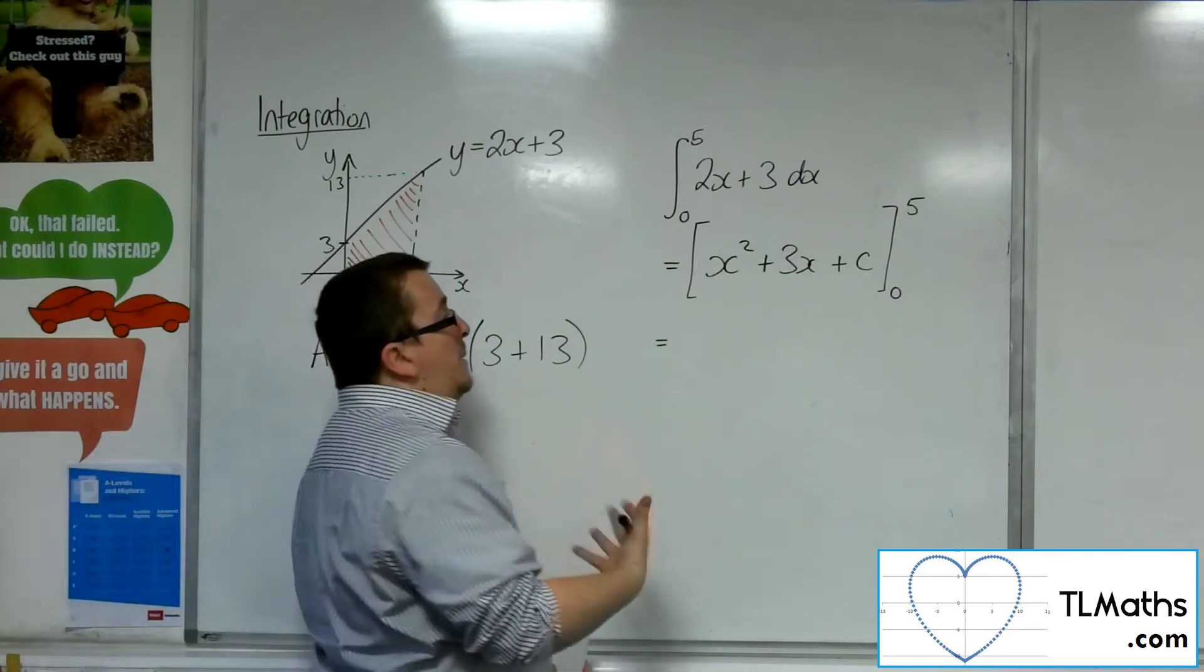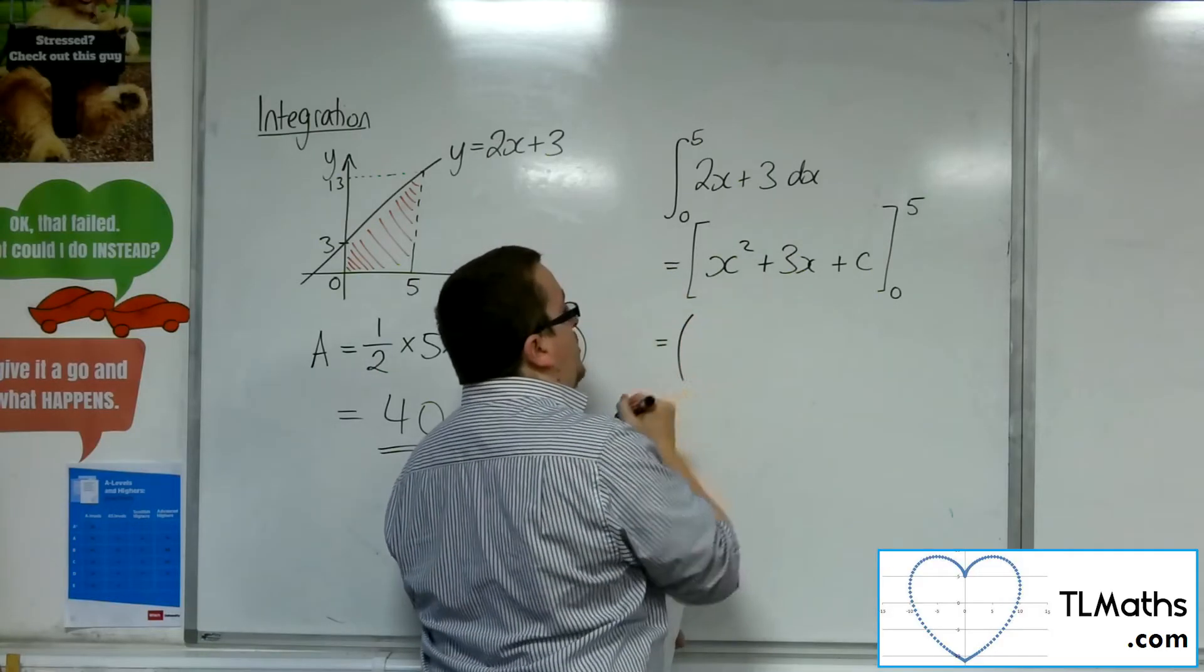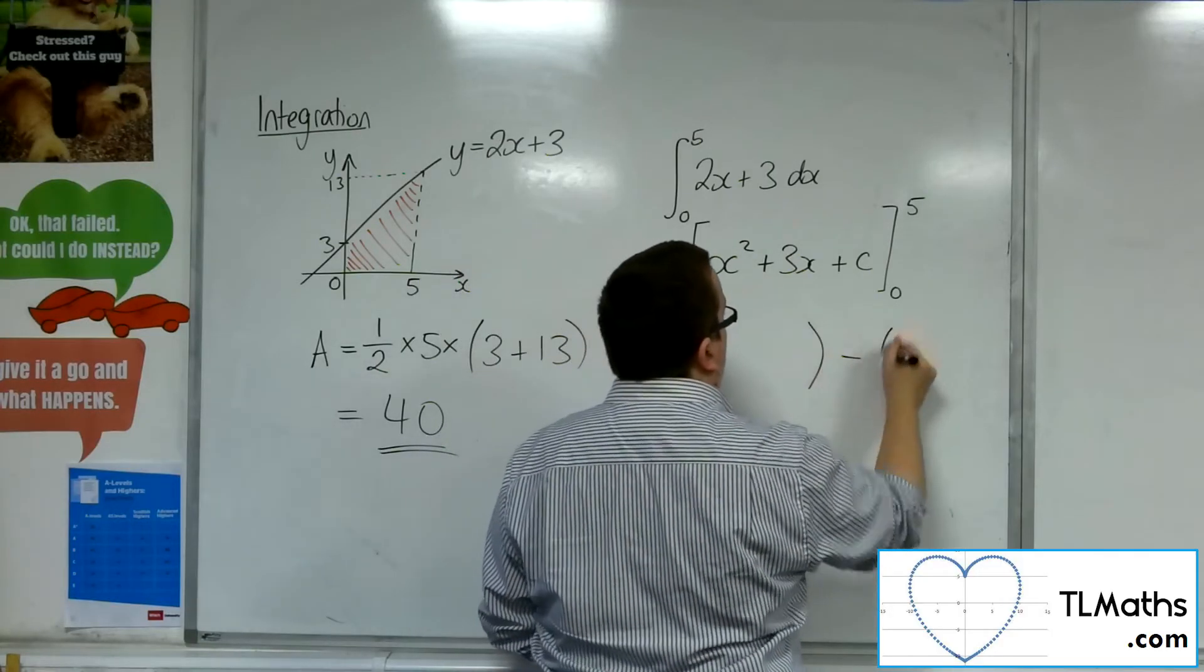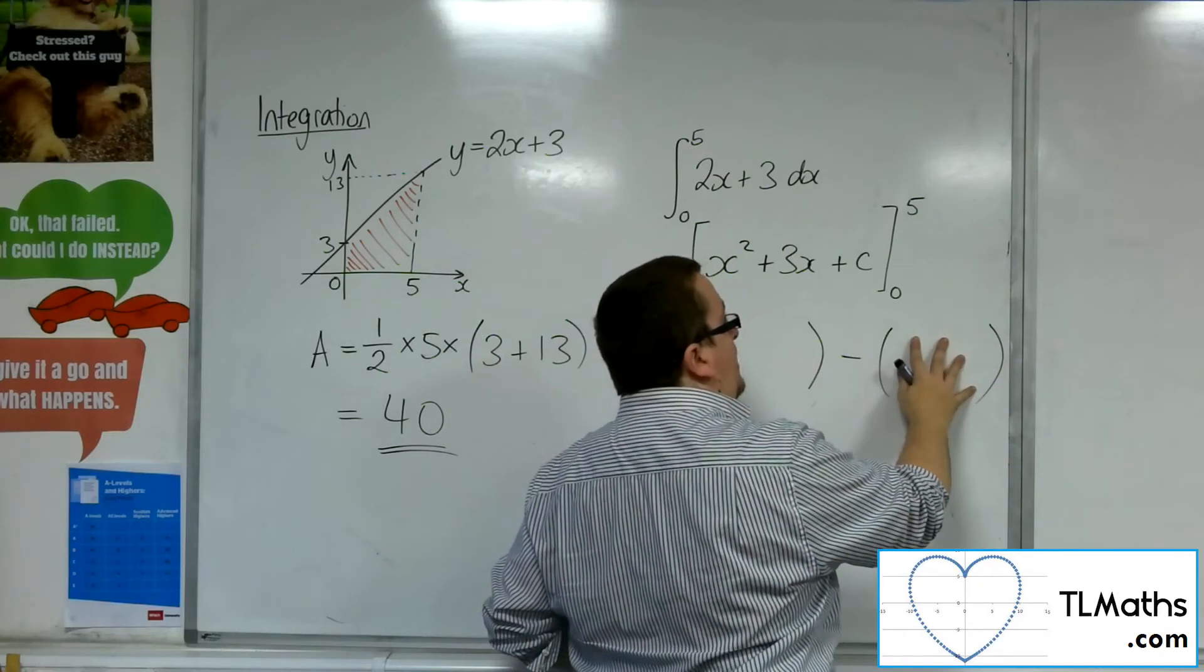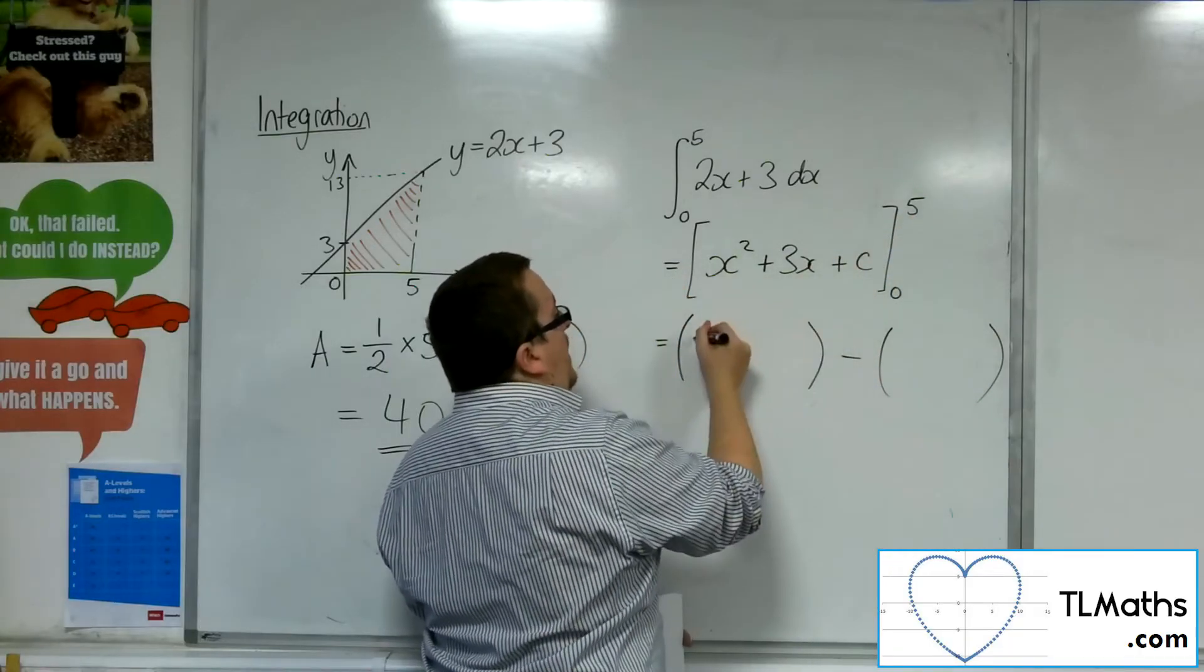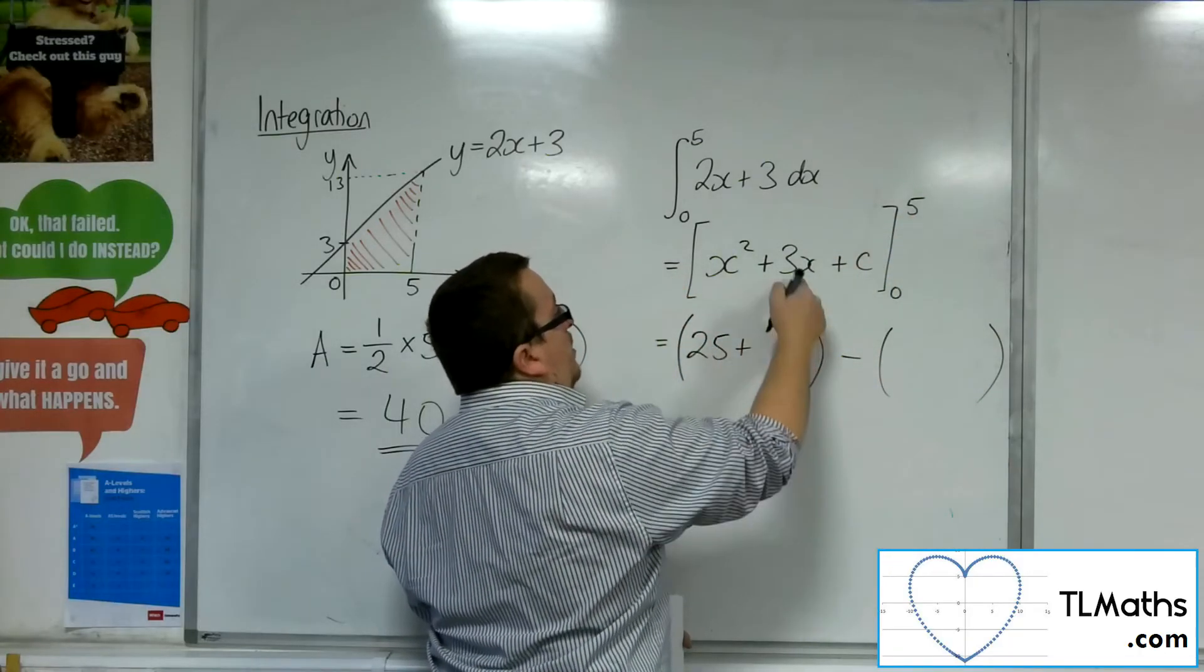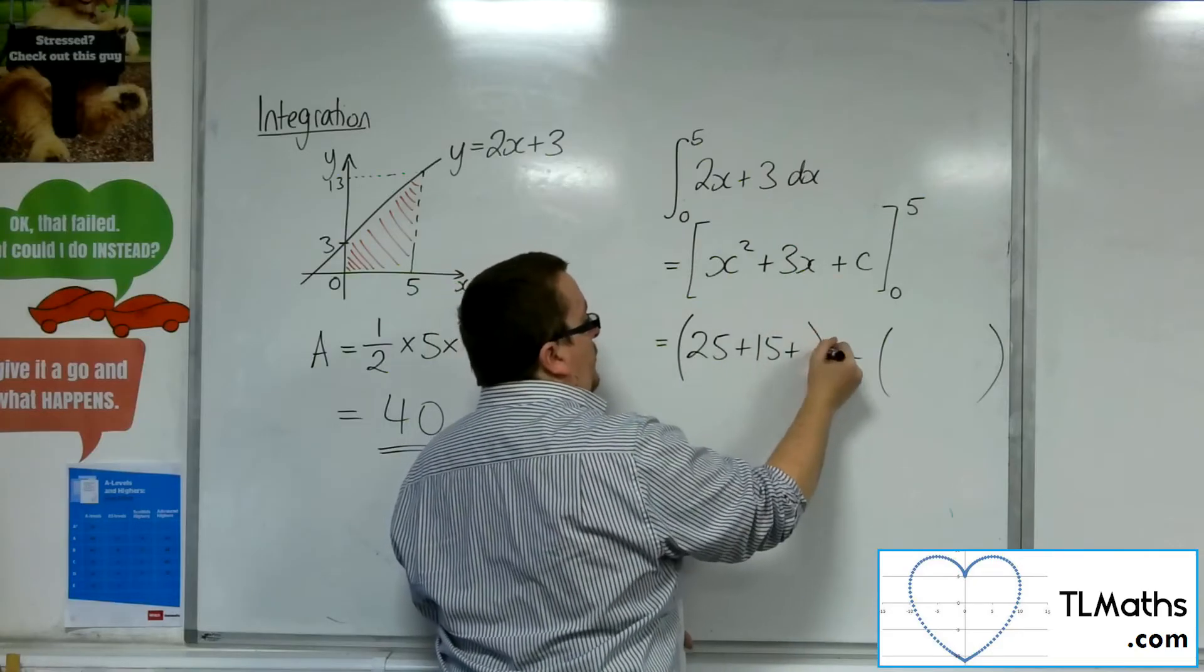Because now I need to substitute in the 5 into this. So I substitute in the 5. It's useful to open up brackets at this point. Now I substitute in the 5 and take away substituting in the 0. So substituting in the 5, I'm going to have 5 squared, so 25, plus 3 lots of 5, which is 15, and I've got that plus c constant of integration.